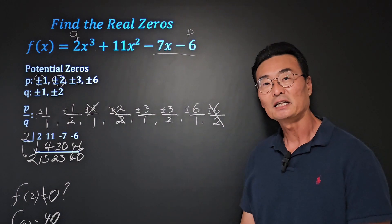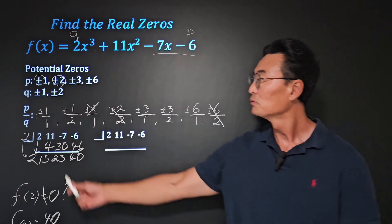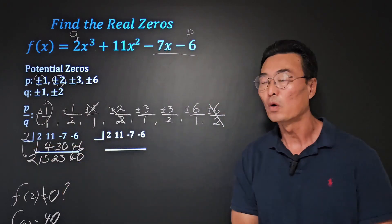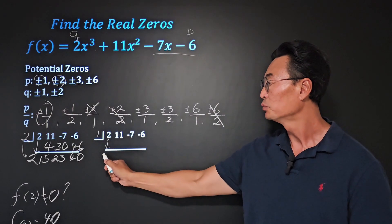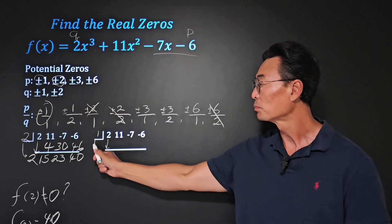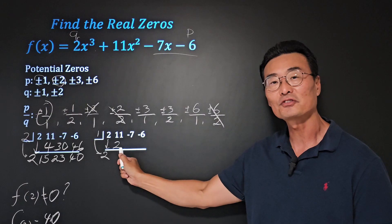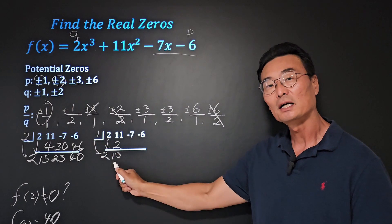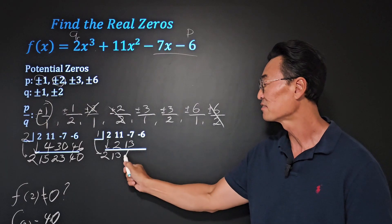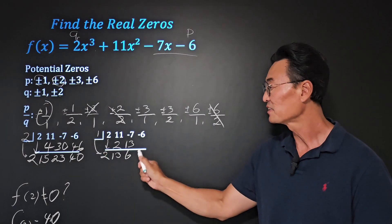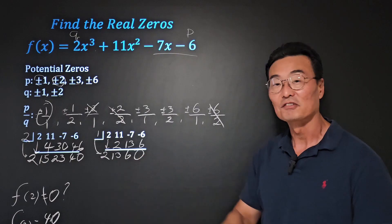Let's go ahead and use the synthetic division again and try out a different number. In this case, let's try out 1. So again, starting with the number 2, we bring it down, and we multiply the 1 to the 2. We get a 2. 11 plus 2 is 13. 1 times 13 is 13. Negative 7 plus 13 is 6. And 1 times 6 is 6, and negative 6 plus 6 is 0.